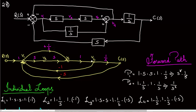For the second forward path P2, we take another combination — from R(s) we go 1, then above via the 1/S shortcut to V3, skipping the two S blocks, then 1 and 1/S. So P2 is 1 · (1/S) · 1 · (1/S). Simplifying: P1 = S² · (1/S) = S, and P2 = (1/S)² = 1/S².